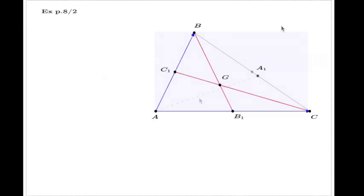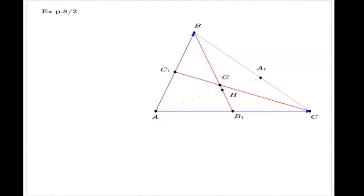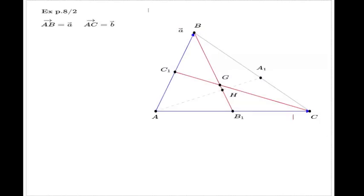Suppose it happened like this — we'll fix it later. So the fact that all three medians intersect at the same point: I can give a name to this point, let's call it H. The proof will go like this. First, we give names to my vectors: AB will be my vector a, and AC will be my vector b. Now, what about the vector CC1 — can you express this in terms of a and b?